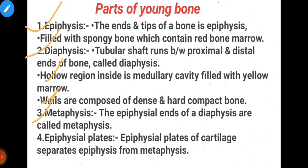Number three: metaphysis. The epiphyseal end of the diaphysis is called the metaphysis — the narrow area where the epiphysis and diaphysis meet. Here the epiphyseal plate is present, also called the growth plate. In growing bones, the epiphyseal plate is present. Once the bone fully ossifies, the epiphyseal plate converts into an epiphyseal line. The epiphyseal plate is made of hyaline cartilage, and the epiphyseal line is made of osseous or bone tissue.